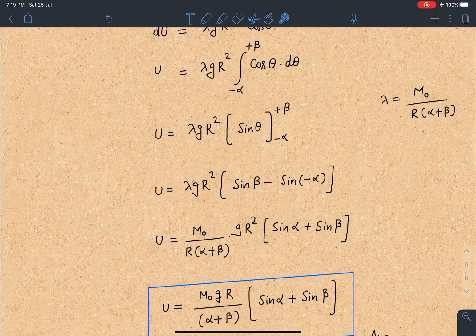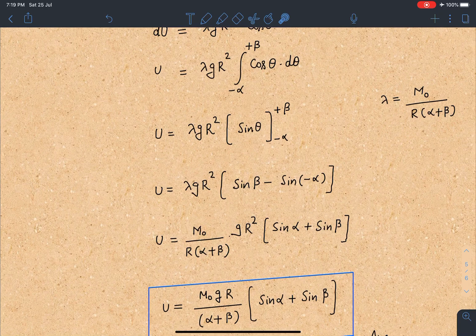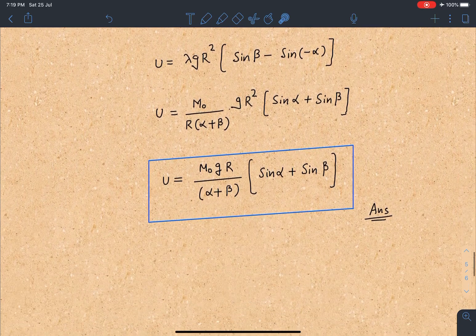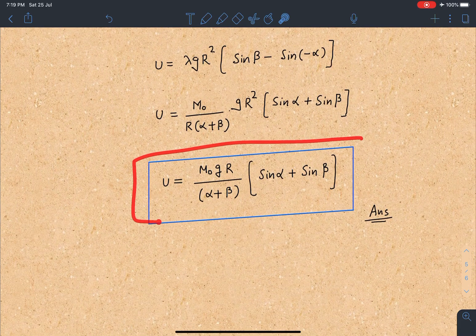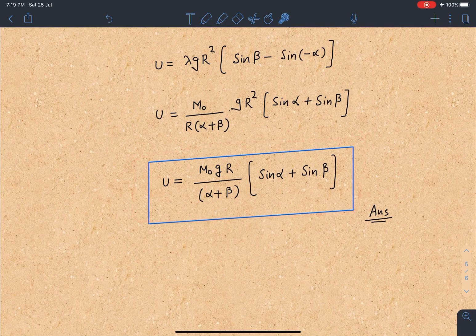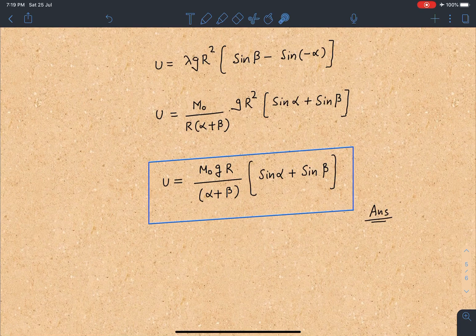When I simplify this I am going to get this value as lambda g r square sin alpha plus sin beta. Then I am substituting the value of lambda from the previous equations. Then finally I am going to get this potential energy as m0 g r by alpha plus beta sin alpha plus sin beta. So this is the answer for third part and that's it in this question.